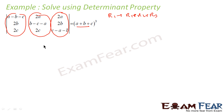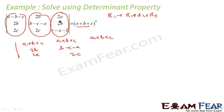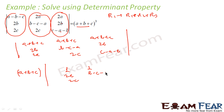Once you get a plus b plus c, you can take it as common. For example, r1 is r1 plus r2 plus r3, giving a plus b plus c in the first row. Then you subtract rows to get zeros, which simplifies the determinant. The key here is: you add all the values in a column and you get the number you are looking for.